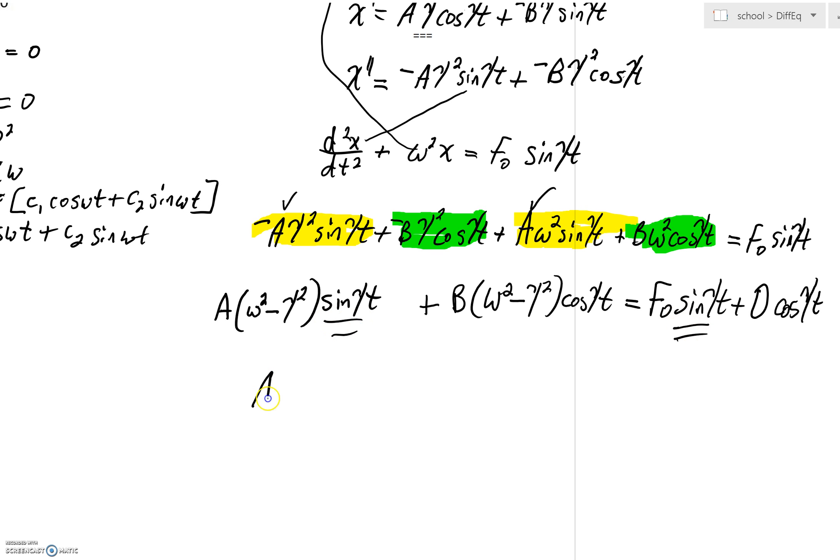you could see very quickly that we'd have A(ω² - γ²). And we can set that equal to f₀.